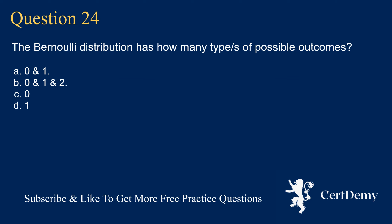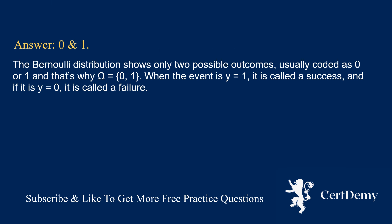Question 24. The Bernoulli distribution has how many types of possible outcomes? Options: 0 and 1; 0, 1, and 2. The answer is: 0 and 1. The Bernoulli distribution shows only two possible outcomes, usually coded as 0 or 1, so omega equals {0,1}. When the event is y equals 1 it is called a success, and if y equals 0 it is called a failure.